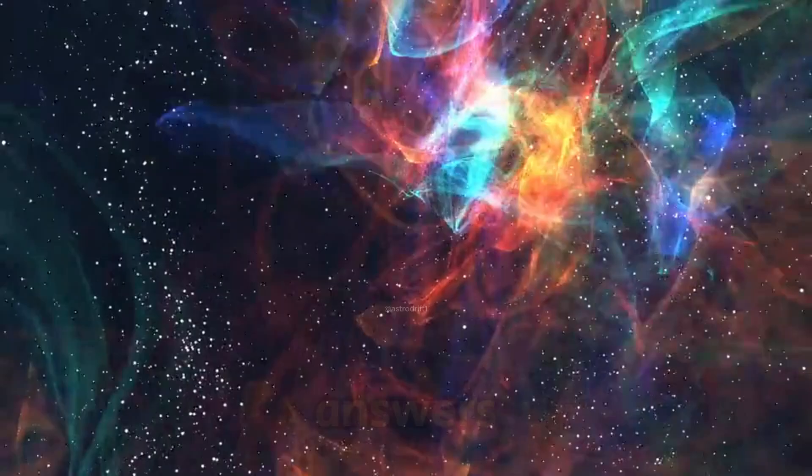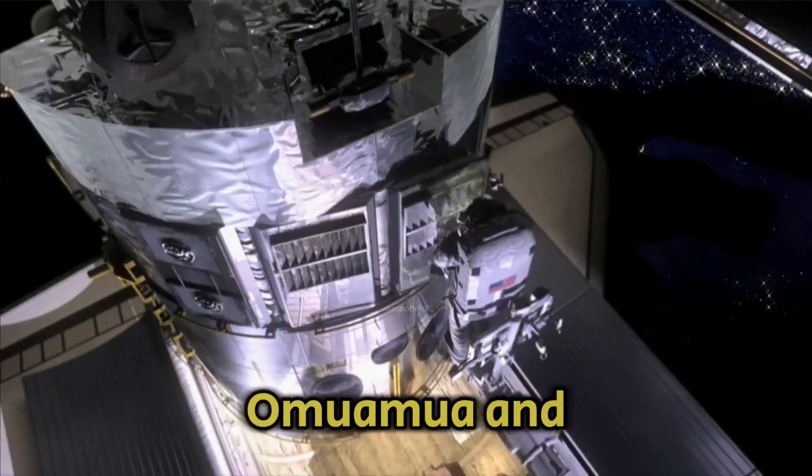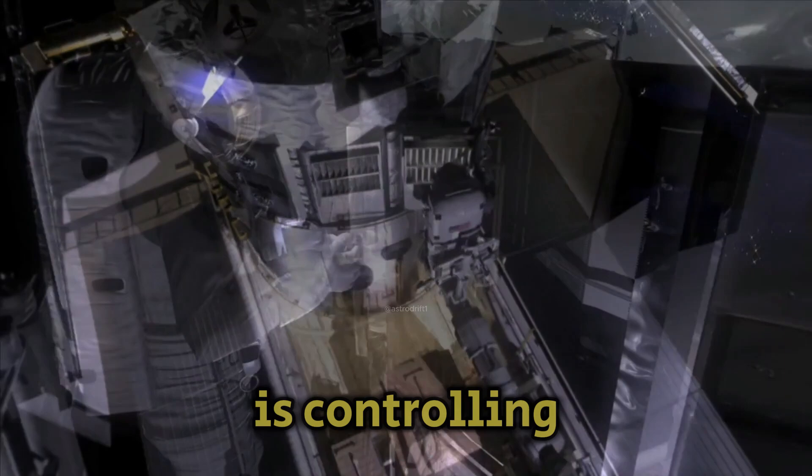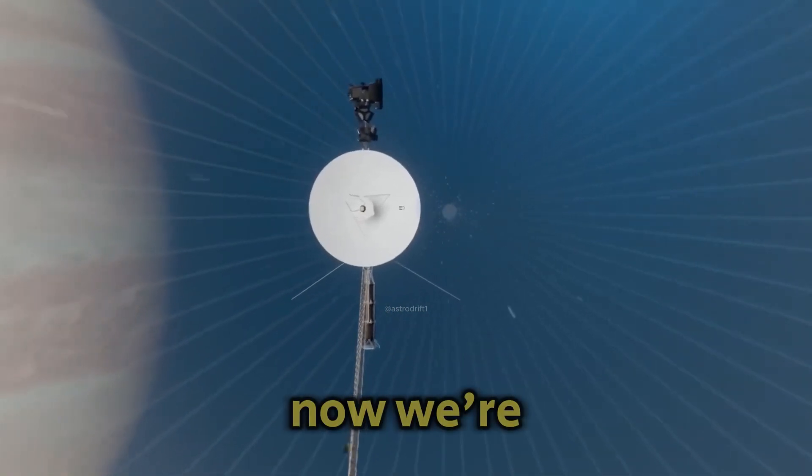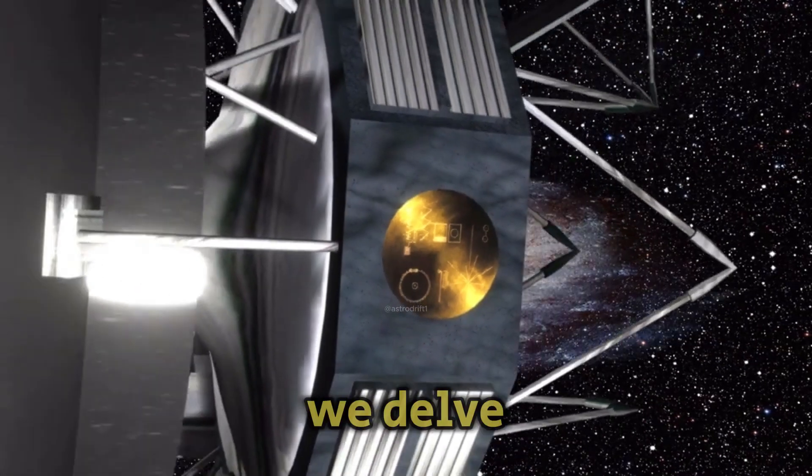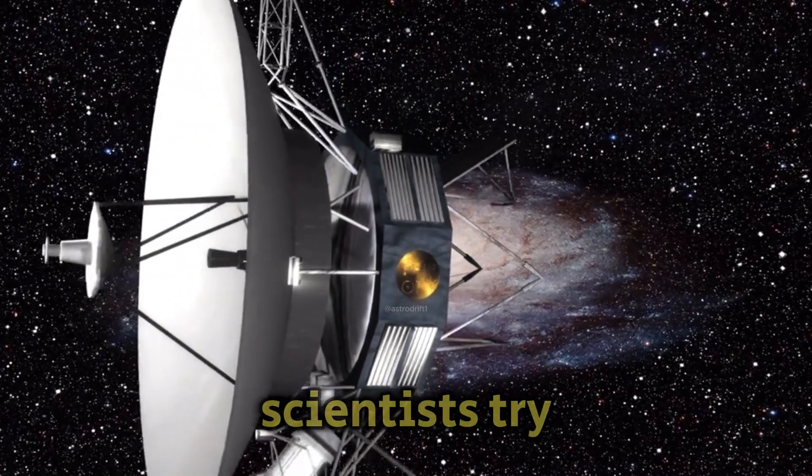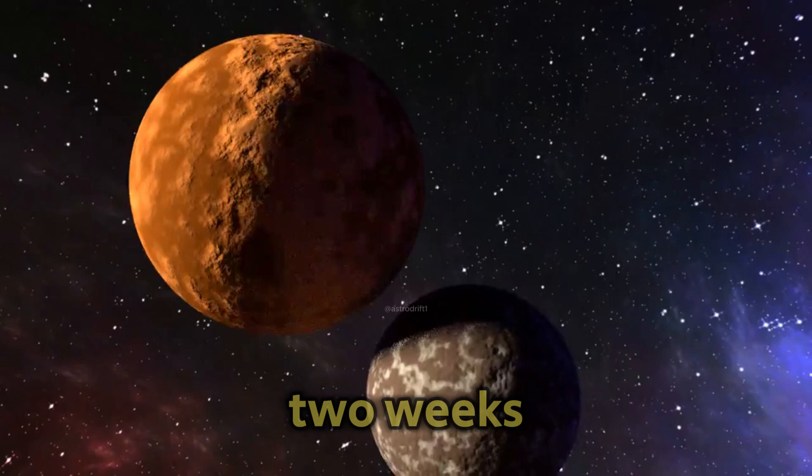While we don't have definitive answers, the questions remain: what exactly is Oumuamua, and who, if anyone, is controlling it? Where is it headed next? The last time it was observed, it was leaving our solar system. Now, we're being told that it's on a collision course with Earth. But before we delve into that, let's look at how scientists try to understand Oumuamua's trajectory, and why they believe it will crash in two weeks.